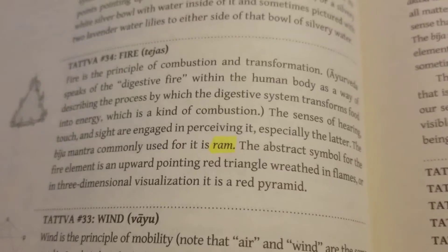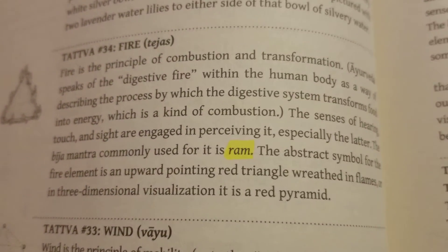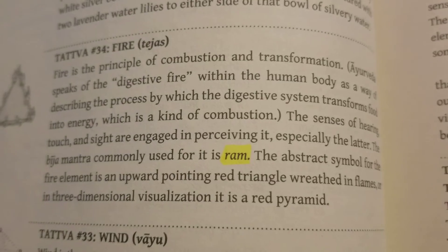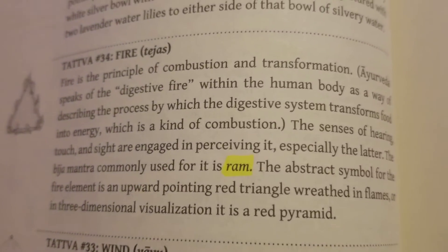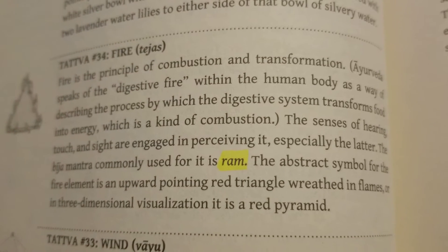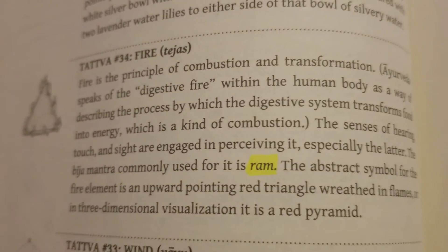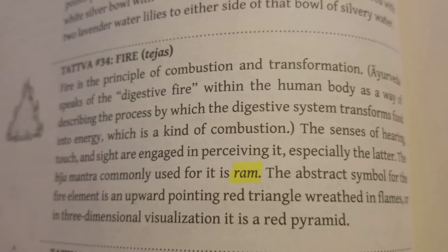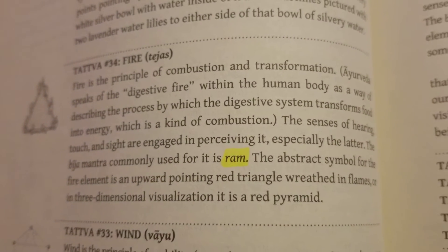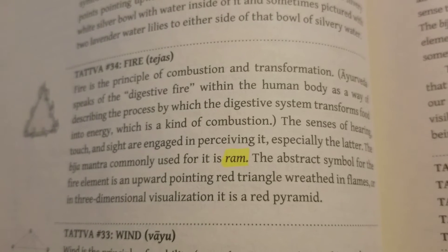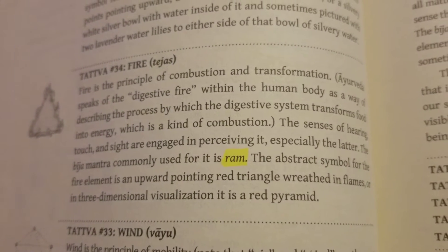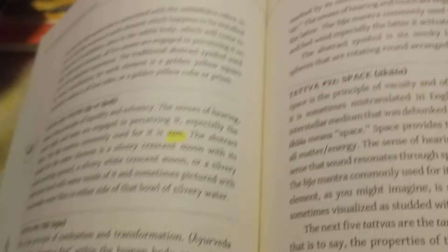Then we move to the next tatwa, which is fire — Tejas, or Agni. Fire is the principle of combustion and transformation. Ayurveda speaks of the digestive fire within the human body as a way of describing the process in which the digestive system transforms food into energy, which is a kind of combustion. The senses of hearing, touch, and sight are engaged in perceiving it, especially the latter. The bij mantra commonly used for it is RAM. The abstract symbol for the fire element is an upward-pointing red triangle wreathed in flames, or in three-dimensional visualization, a red pyramid.